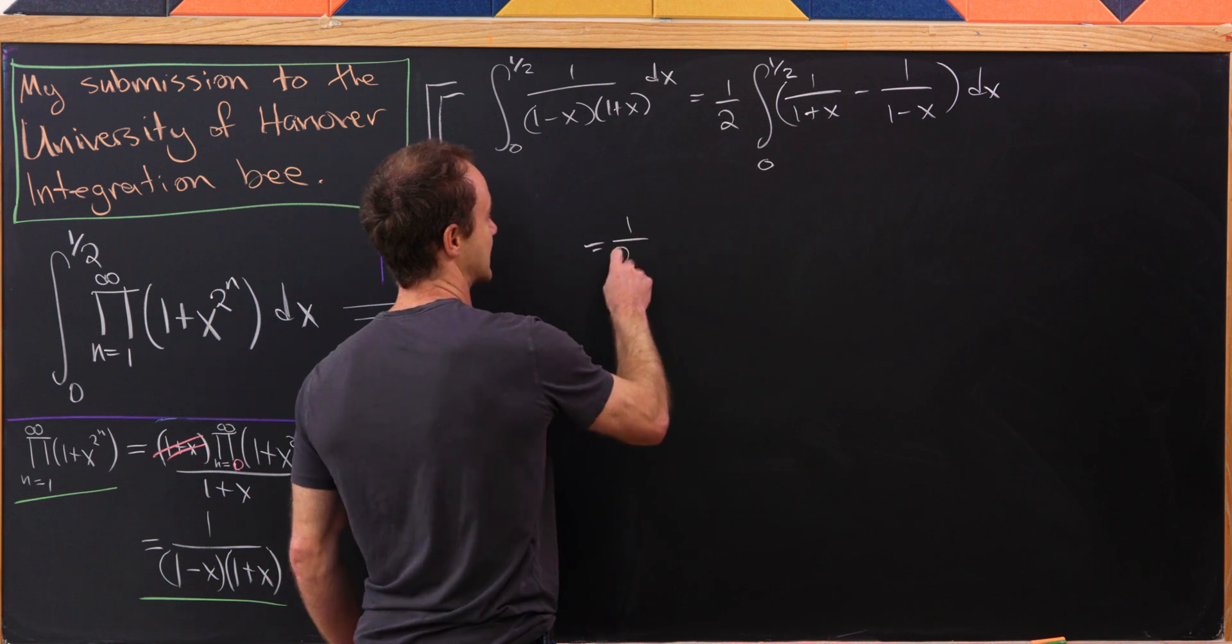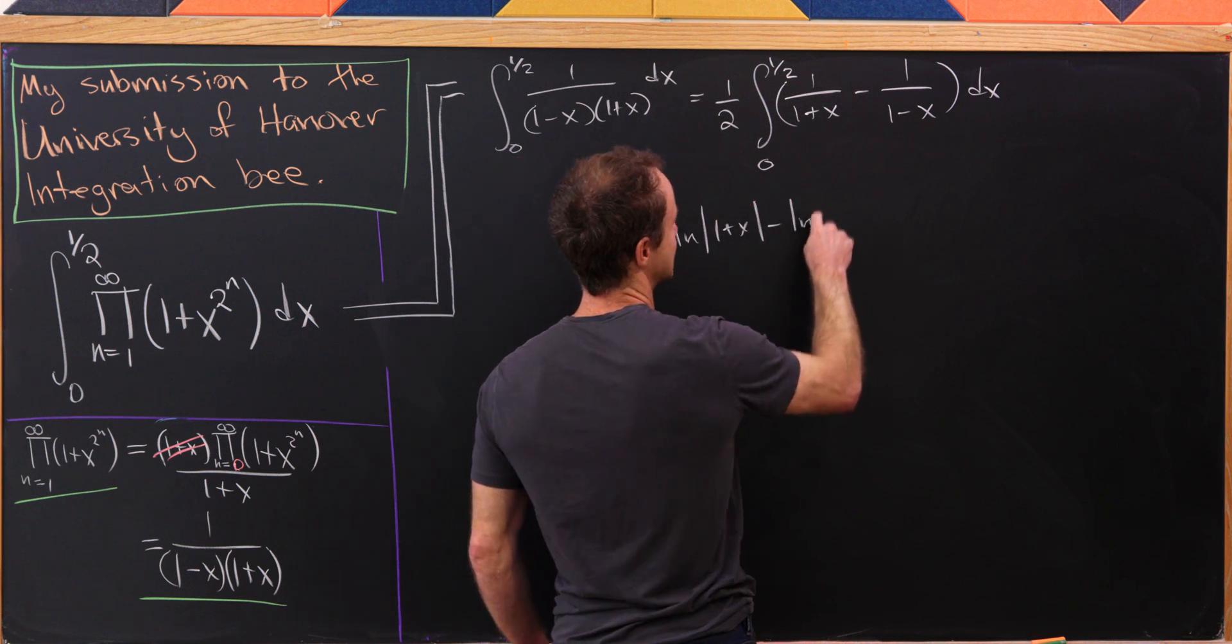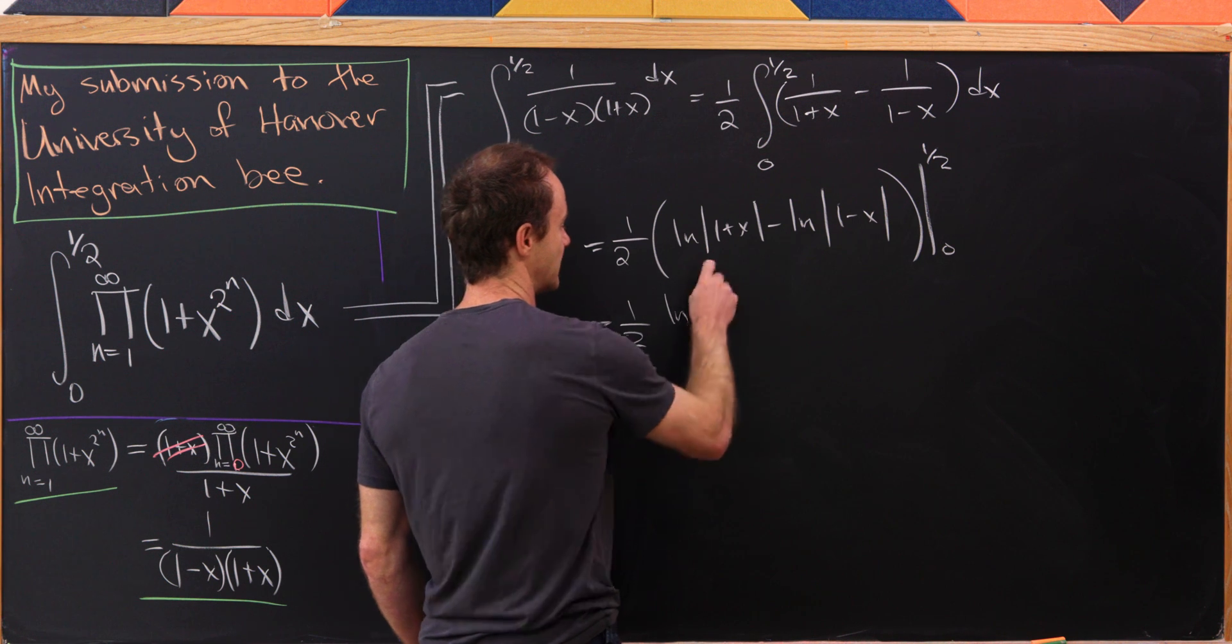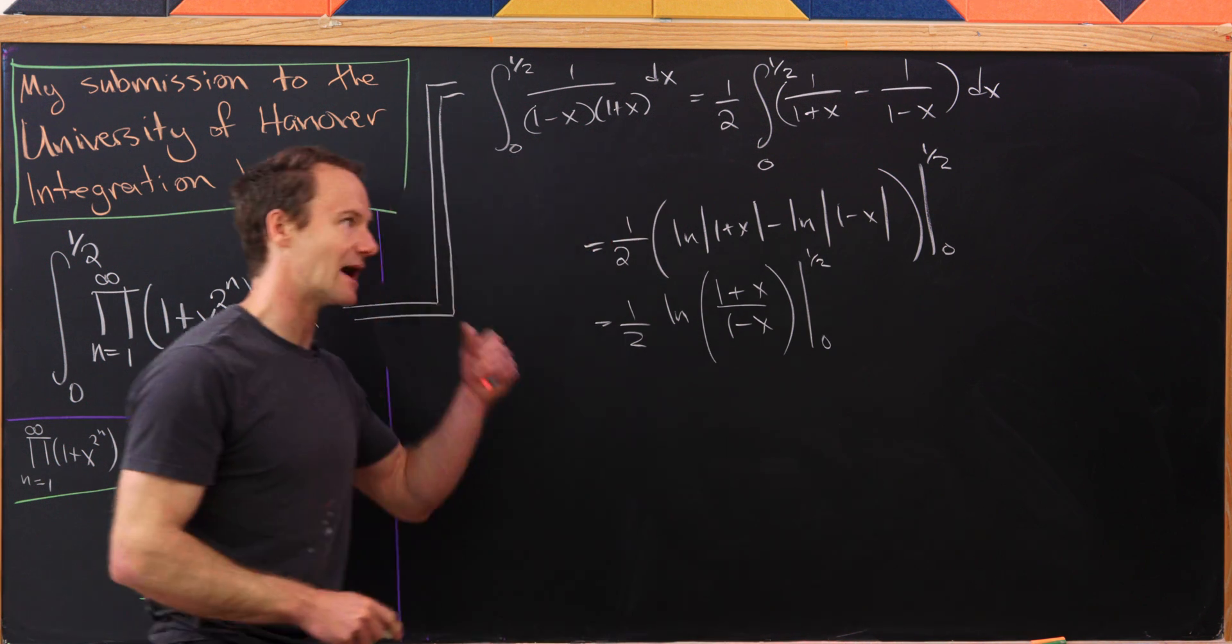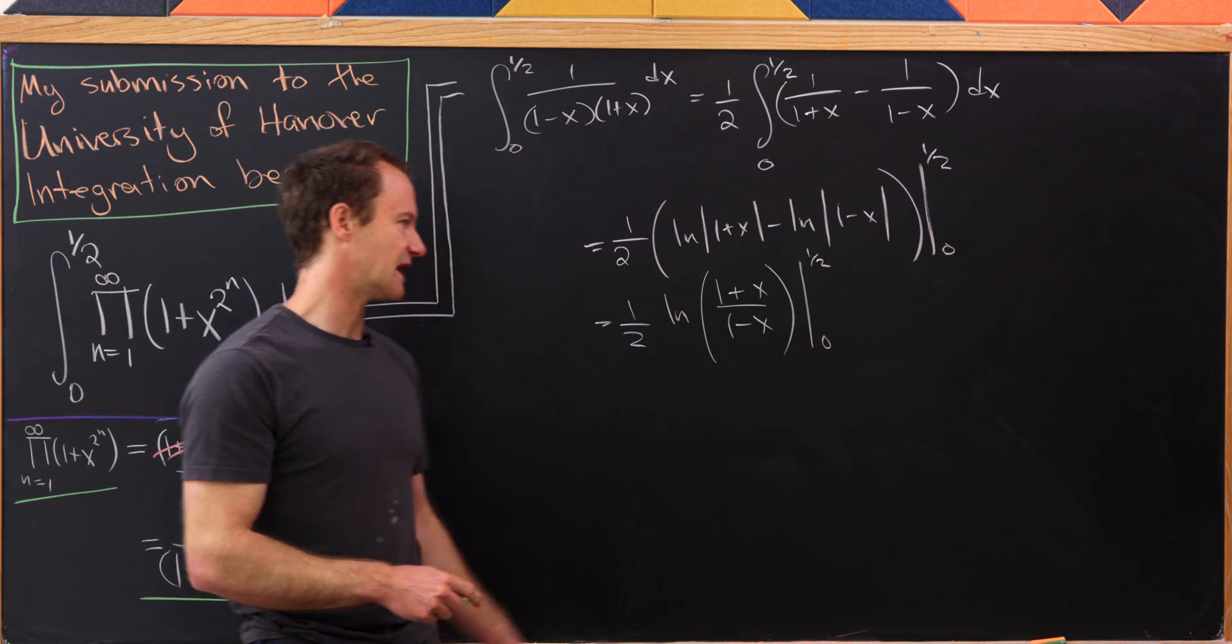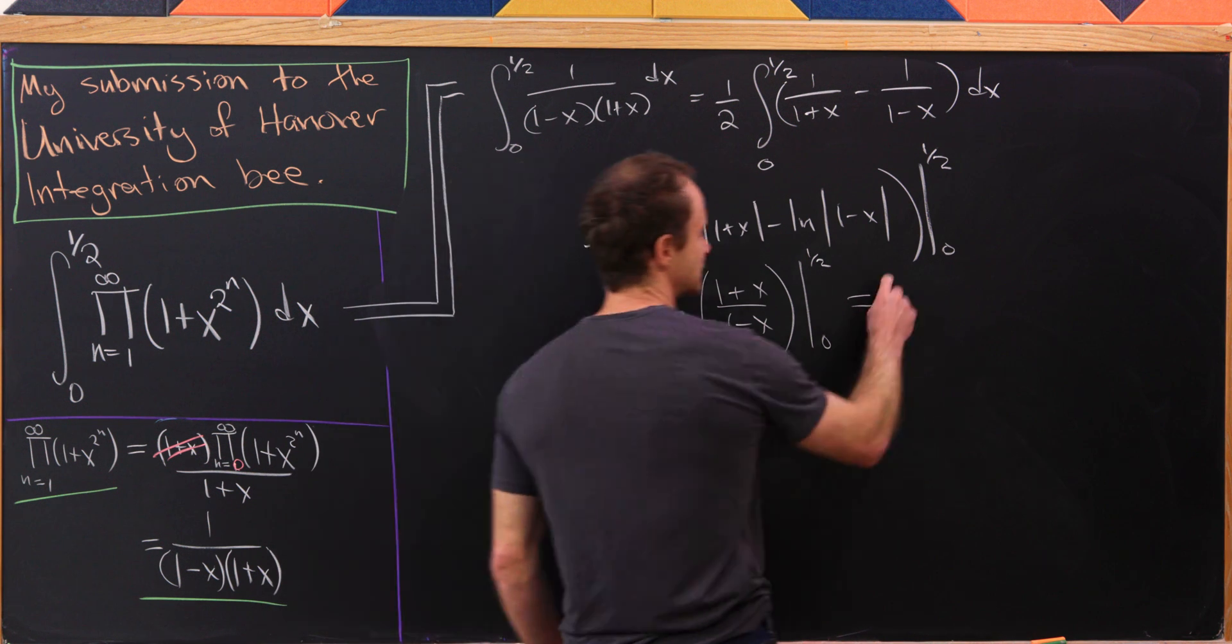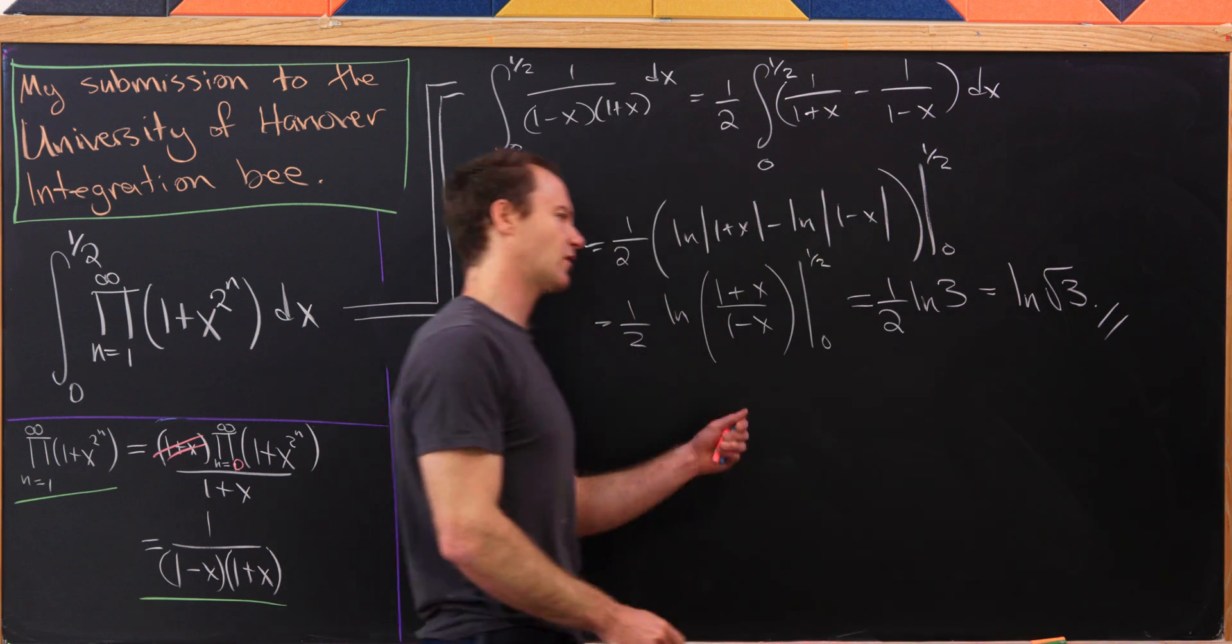Those are both nice natural log integrals. That's going to give me the natural log of the absolute value of 1 plus x minus the natural log of the absolute value of 1 minus x, evaluated from 0 to 1/2. I can combine those using natural log rules: the natural log of 1 plus x over 1 minus x evaluated from 0 to 1/2. If I plug in 0 I get the natural log of 1 which is 0. If I plug in 1/2 I'll get 3 halves in the numerator, 1/2 in the denominator, giving me 3 overall. So this gives me 1/2 times the natural log of 3, or you can write that as the natural log of the square root of 3.